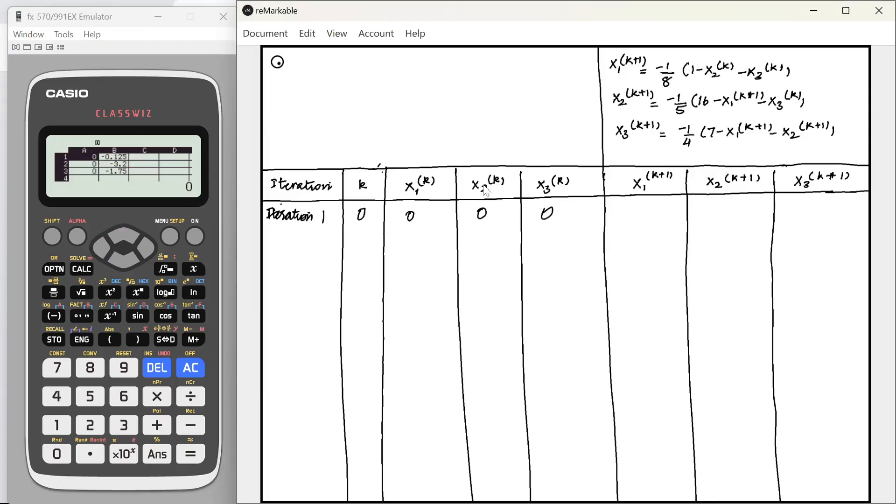Now our system is ready. We just need to solve the iterations. I will just confirm the formula, minus 1 by 8 times 1 minus A2 minus A3, minus 1 by 5 times 16 minus A1 minus A3, minus 1 by 4 times 7 minus A1 minus A2. In column A, the values currently are x1 0, x2 0, x3 0. Cell B1 is x1 k+1 right now. We will copy this value into A1, which will give us the value of x2 k+1. The value in A1, I am just going to write equals B1, alpha B1.